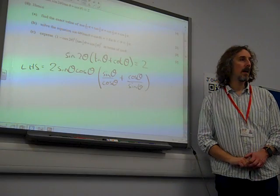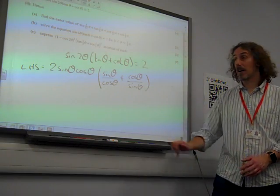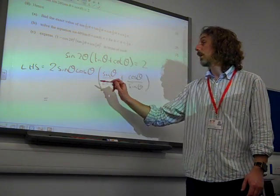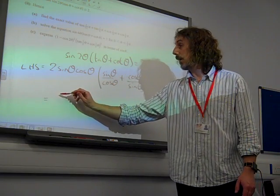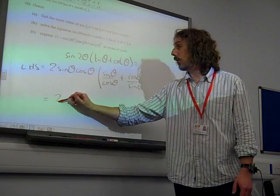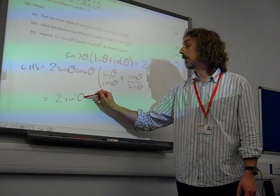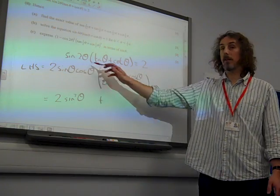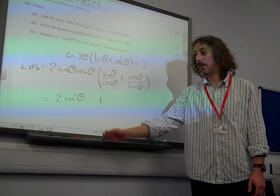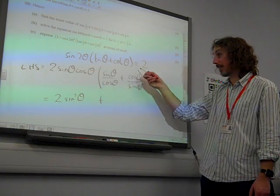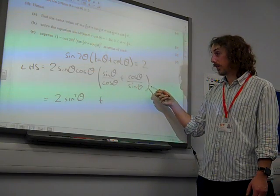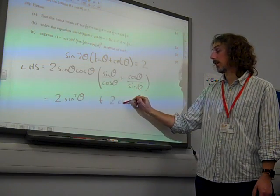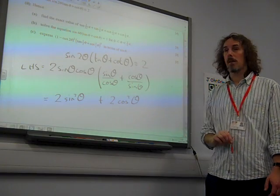If I multiply out this bracket, it gives me, that times this is 2 sine squared theta, because the cos theta would cancel out. Sine theta times sine theta is sine squared. That one times that term is 2 cos squared theta.